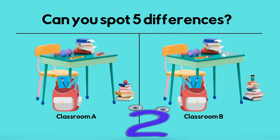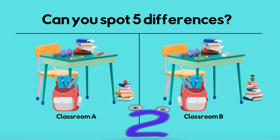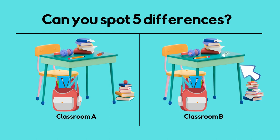Pause the video now if you need more time. In Classroom A, there is an apple on the books. In Classroom B, there is a coffee on the books. The eraser is different. In Classroom B, there is a small pink heart on the headphones.